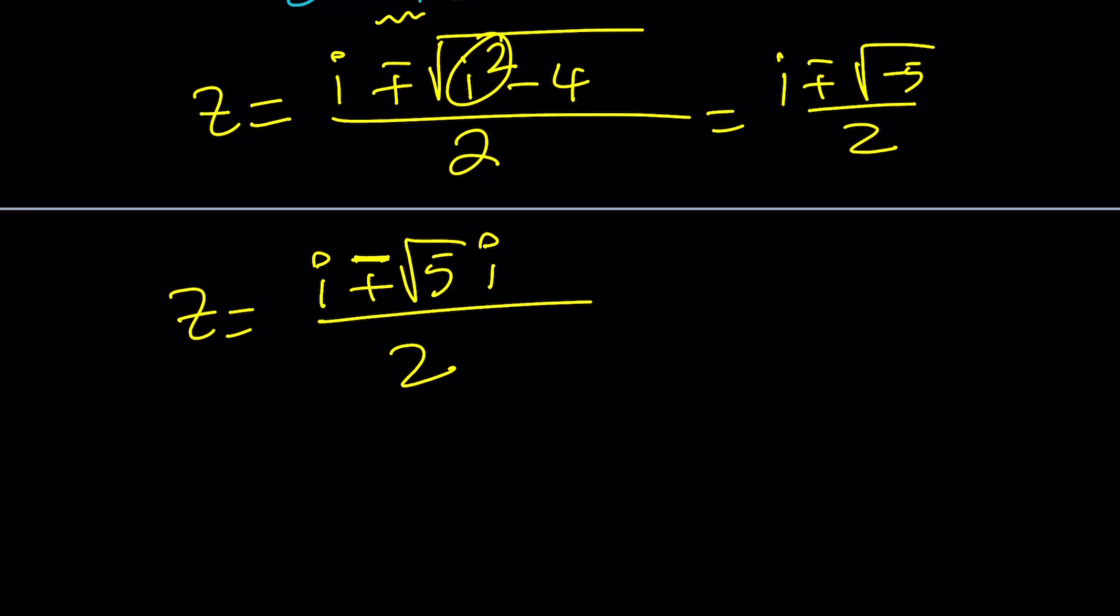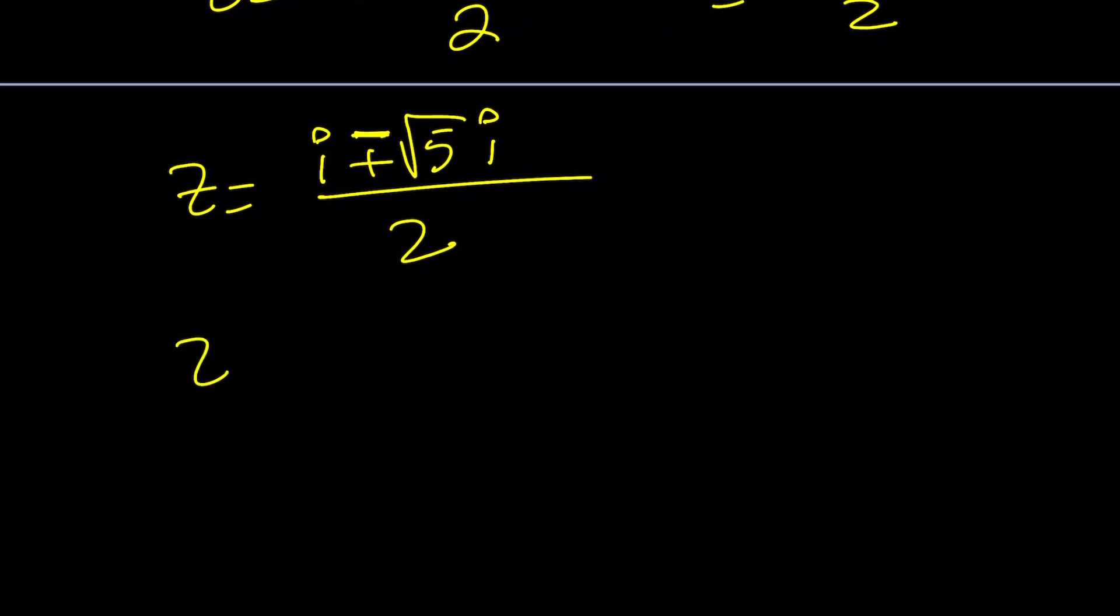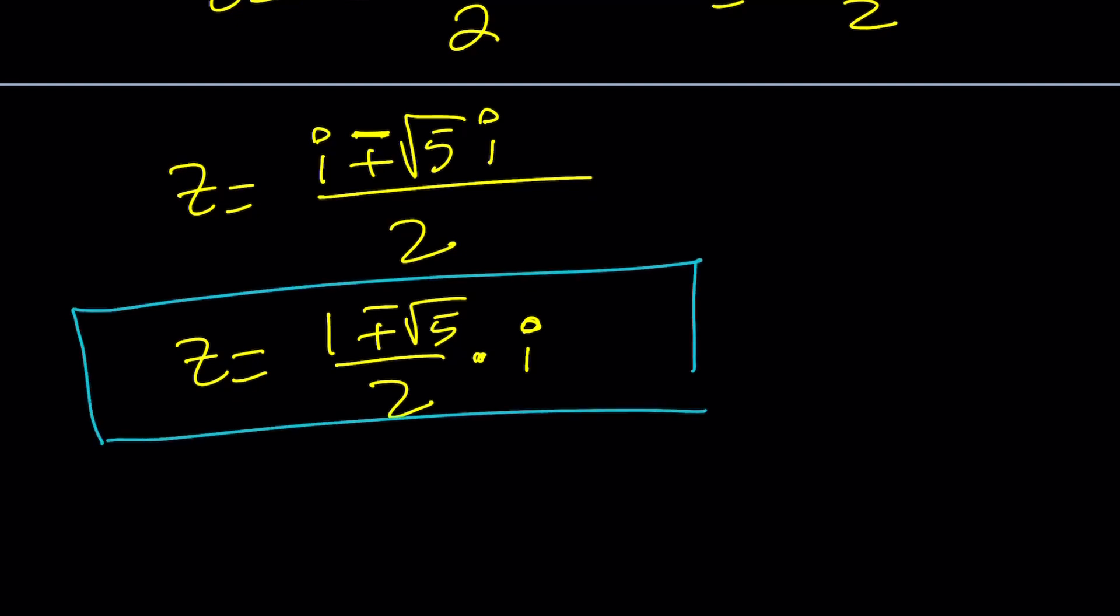Now, since we have i, like we're adding the multiples of i, we can write this as (1 plus minus root 5) over 2, all of that multiplied by i. Does that look familiar? Do you smell the golden ratio? You get the golden flavor? This gives us the solutions. Are those the only solutions? Yes, because this is quadratic.